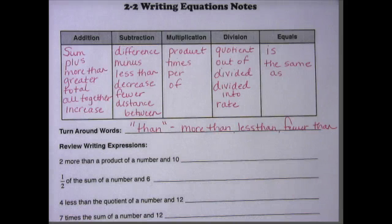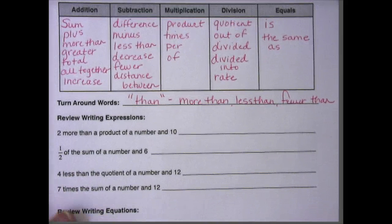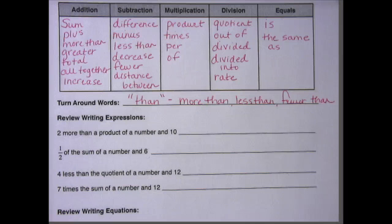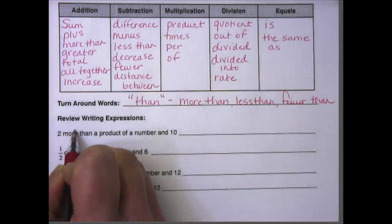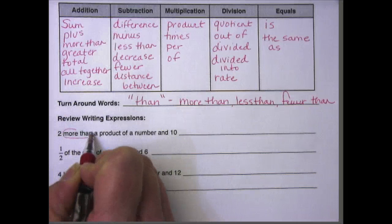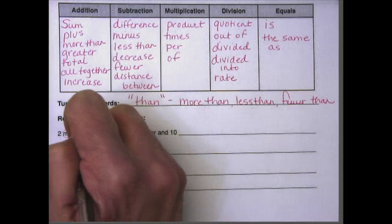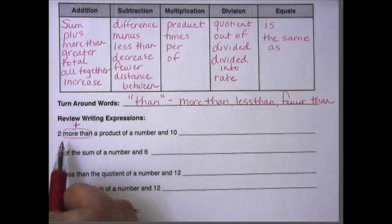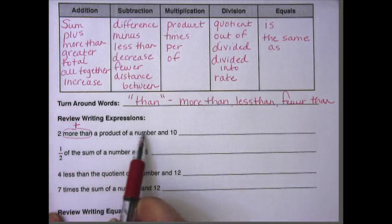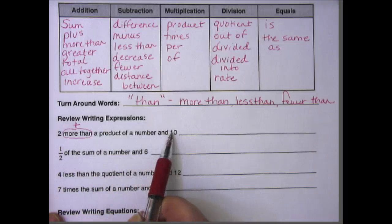So let's review writing expressions. This takes us back to the beginning of the year, where we said two more than a product of a number and ten. Well, we can just make some notes over here. We know what two is. We know that more than means to add. We also know that that is one of our turnaround words, so it's going to change us around. A product of a number and ten.